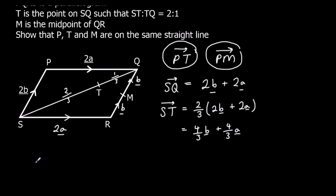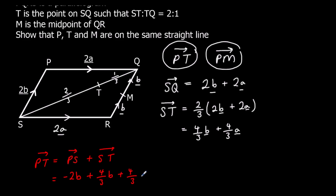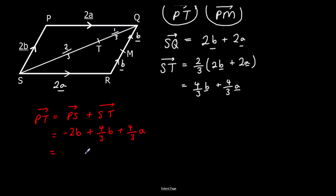Let's work out P to T. We go from P to S and then S to T. P to S is minus 2b, and S to T we just worked out as four thirds b plus four thirds a. Simplifying: we get four thirds a, and for b we have four thirds minus 2 — which is four thirds minus six thirds — giving minus two thirds b. So P to T is four thirds a minus two thirds b.